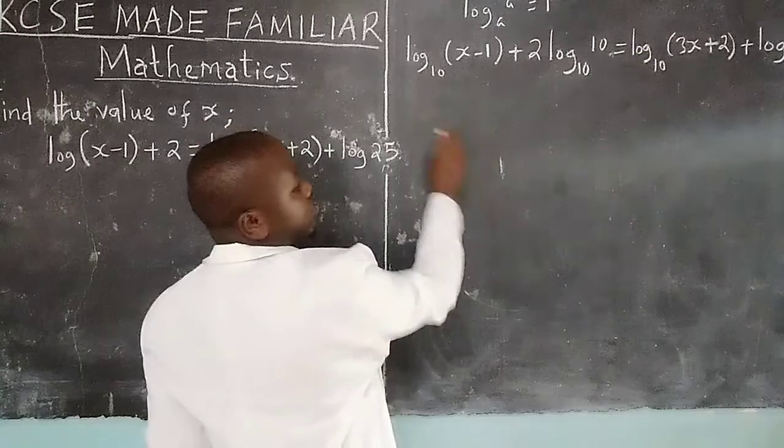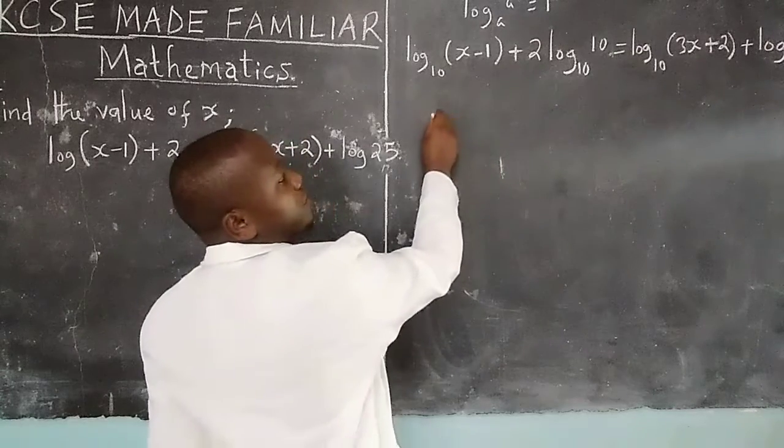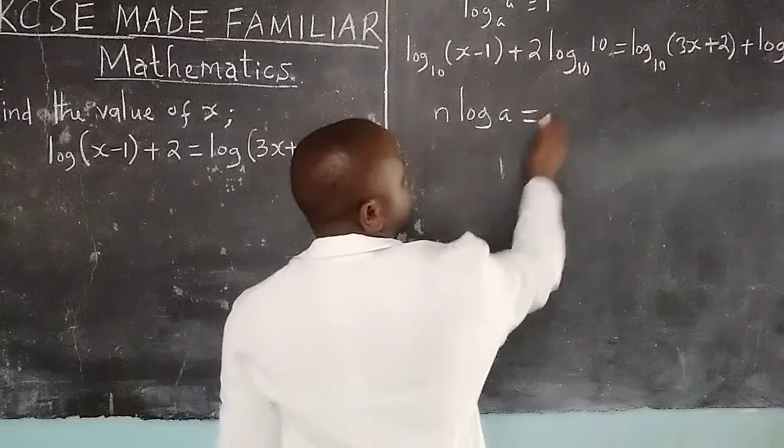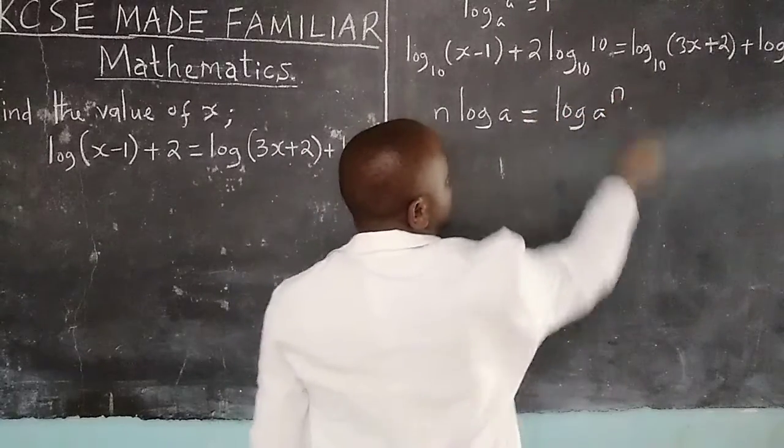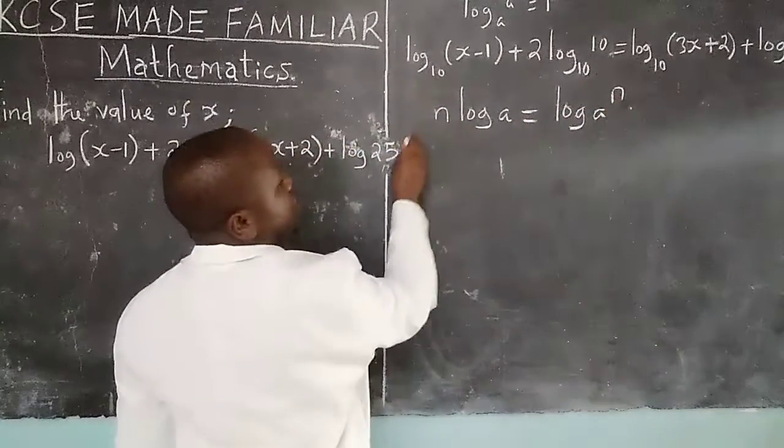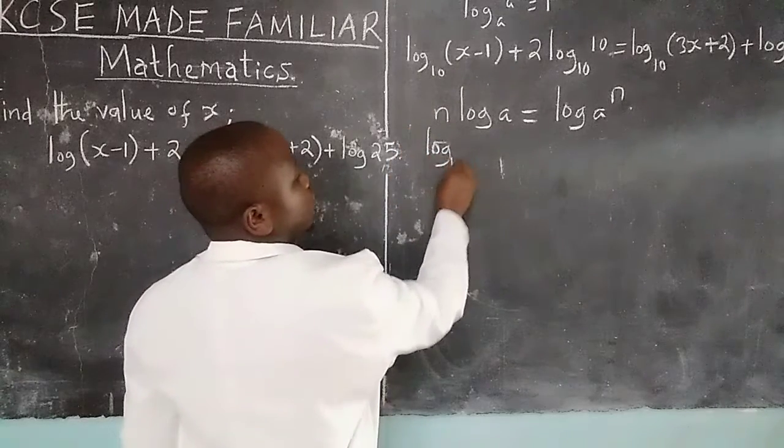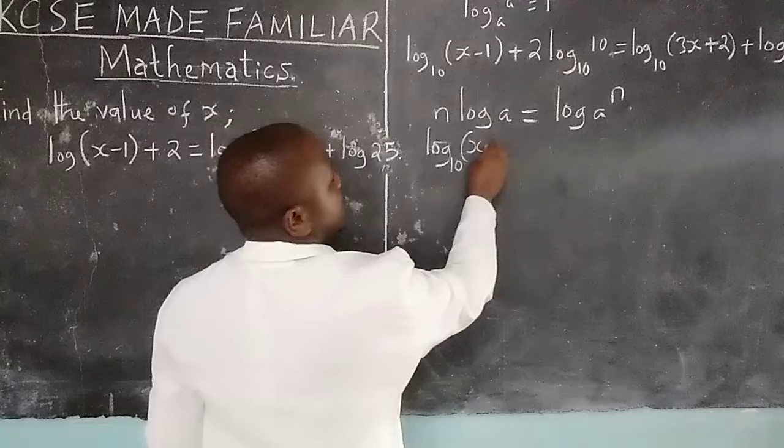We know the log law which talks of given n times the logarithm of a, we can solve it by having log of a raised to power n. Therefore, this becomes log₁₀(x-1),